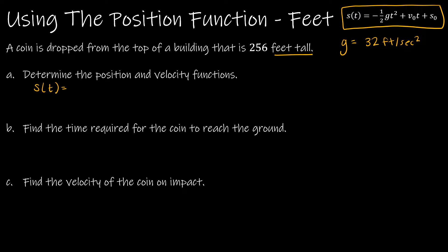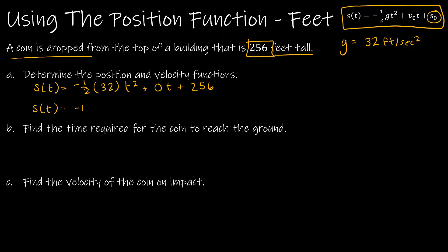So s of t is negative one-half times 32 t squared plus v sub zero. What's the initial velocity? The coin is dropped, meaning it's not already moving, so v sub zero is zero. And s sub zero is the starting height — from the top of a building that is 256 feet tall — so plus 256. After cleanup, s of t equals negative 16t squared plus 256.